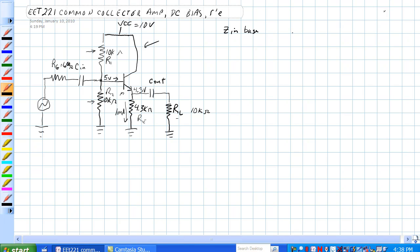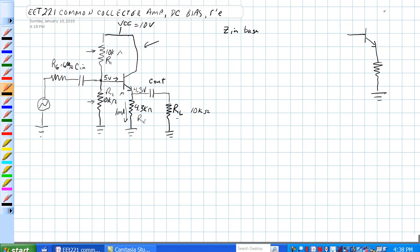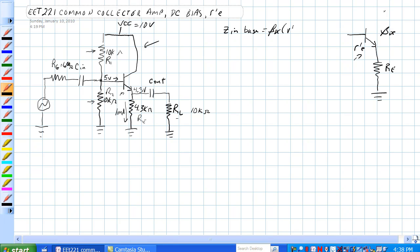So ZN base looks like that junction of the transistor we have the RE and we have an R prime E right there and beta DC of the transistor also plays a part. So ZN base is equal to beta DC times R prime E plus RE.